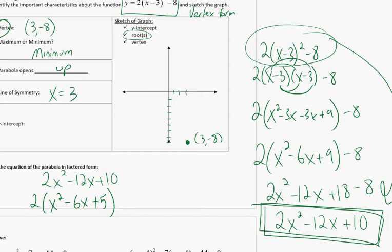Yep, our roots are 1 and 5. So we're going to cross the x-axis here, and the x-axis here. That's enough to give us a good sketch.